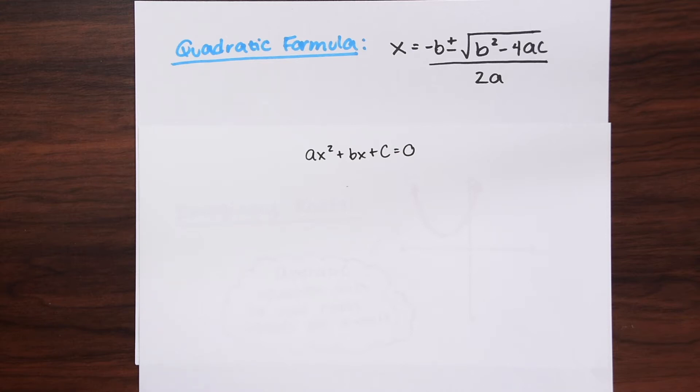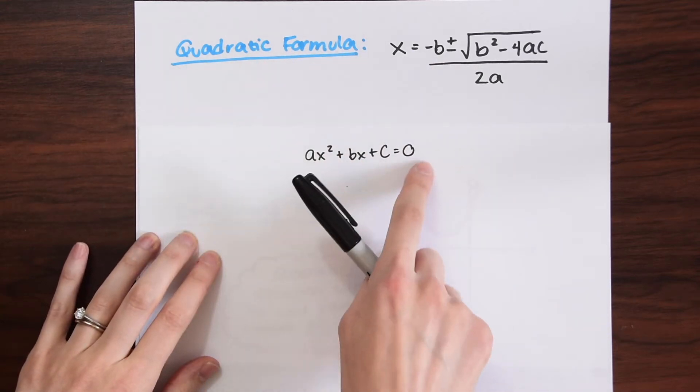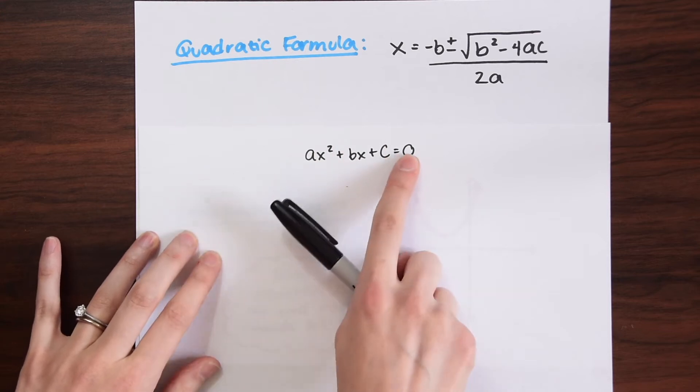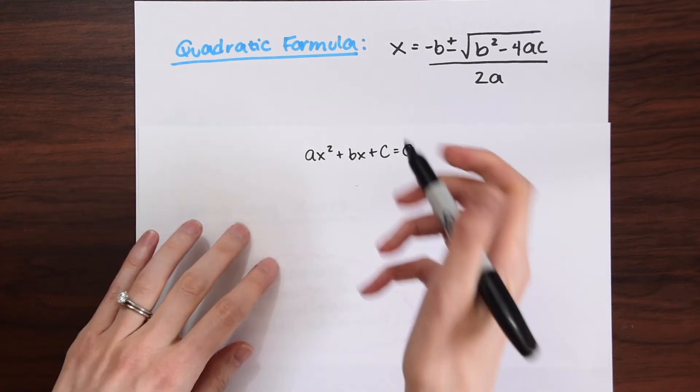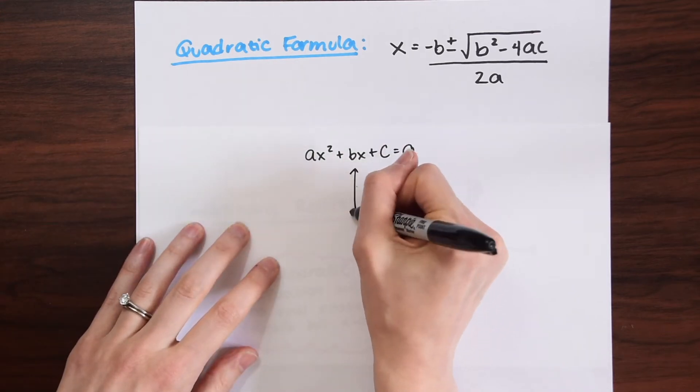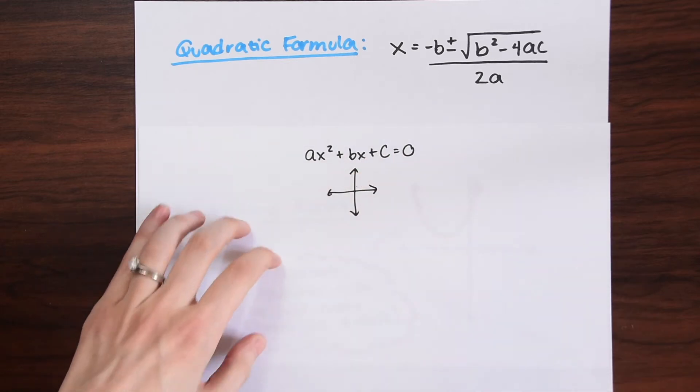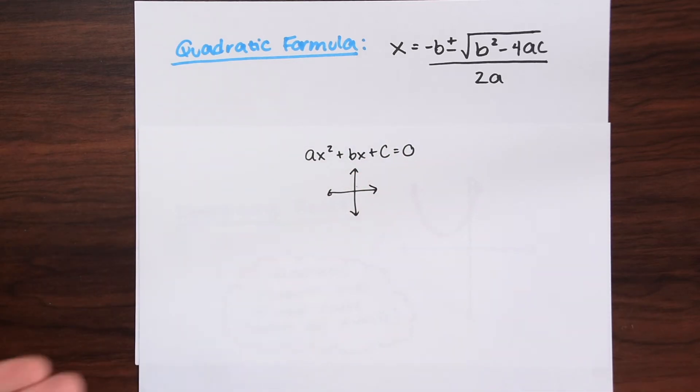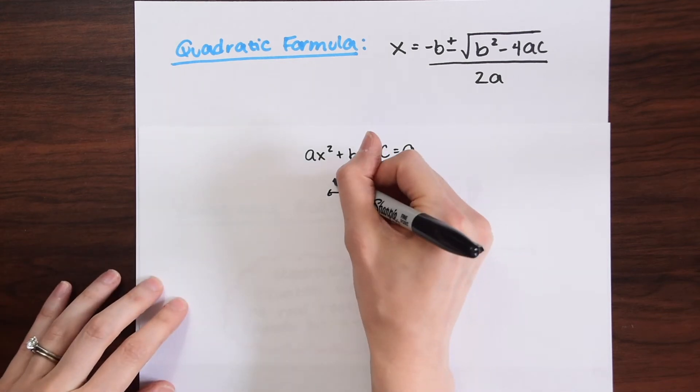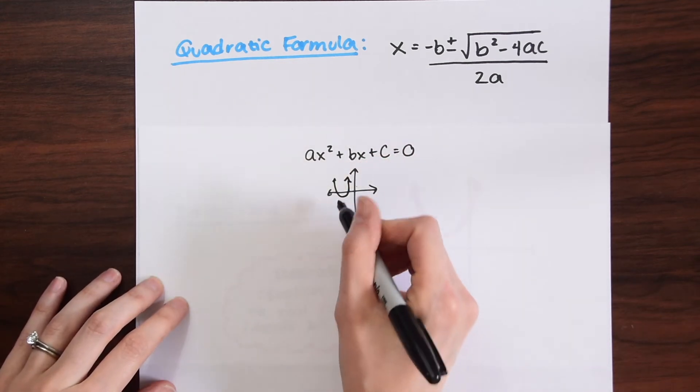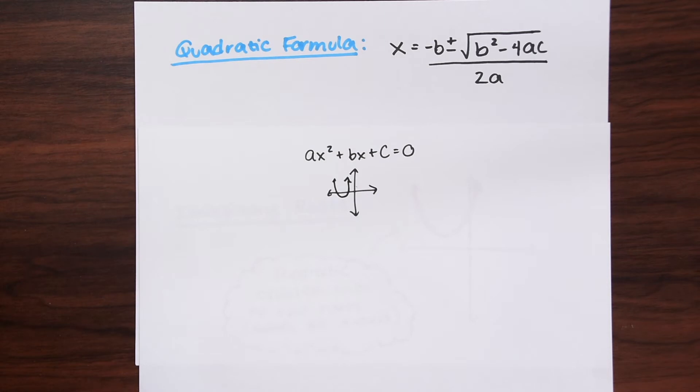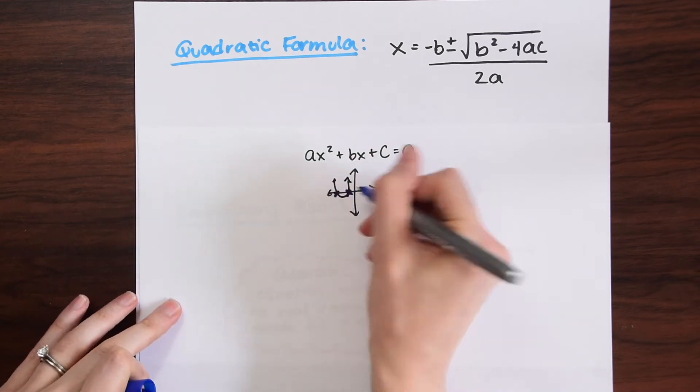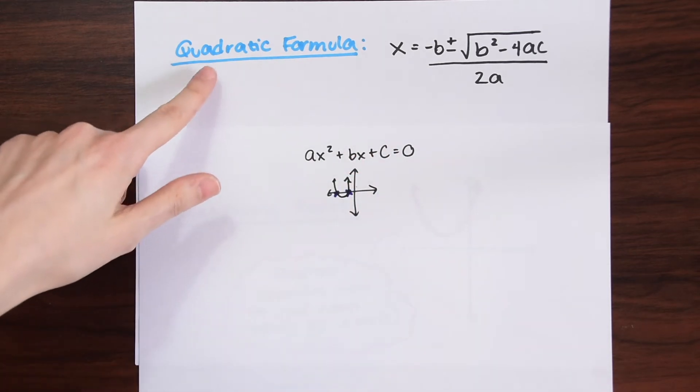When we are using the quadratic formula, we always want to find the x values of the quadratic equation. The x values are where the equation, once graphed, falls on the x-axis. If we have a parabola, where does it hit the x-axis? That's what we're trying to find when we use the quadratic formula.